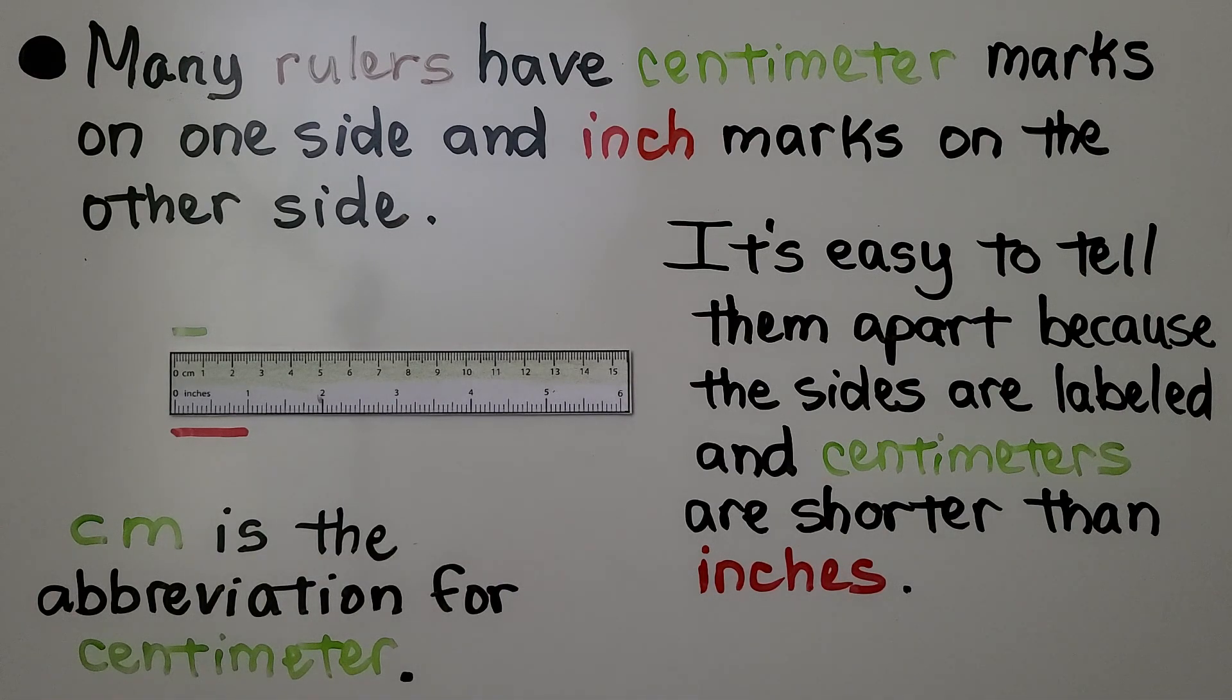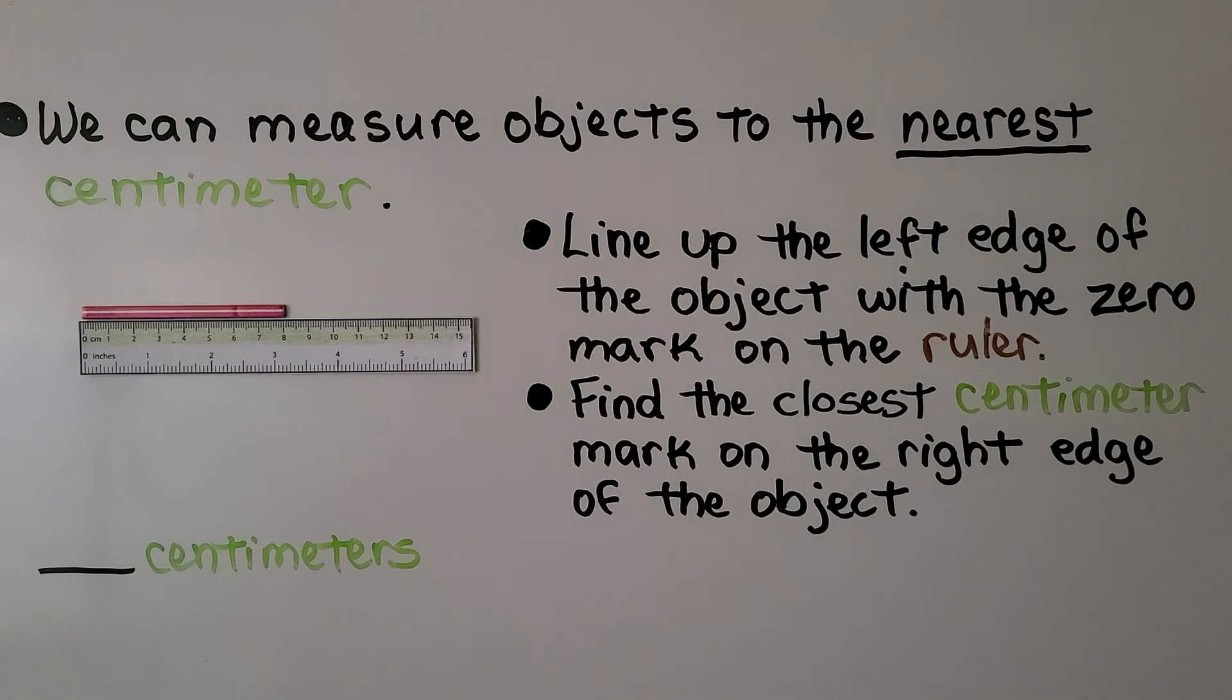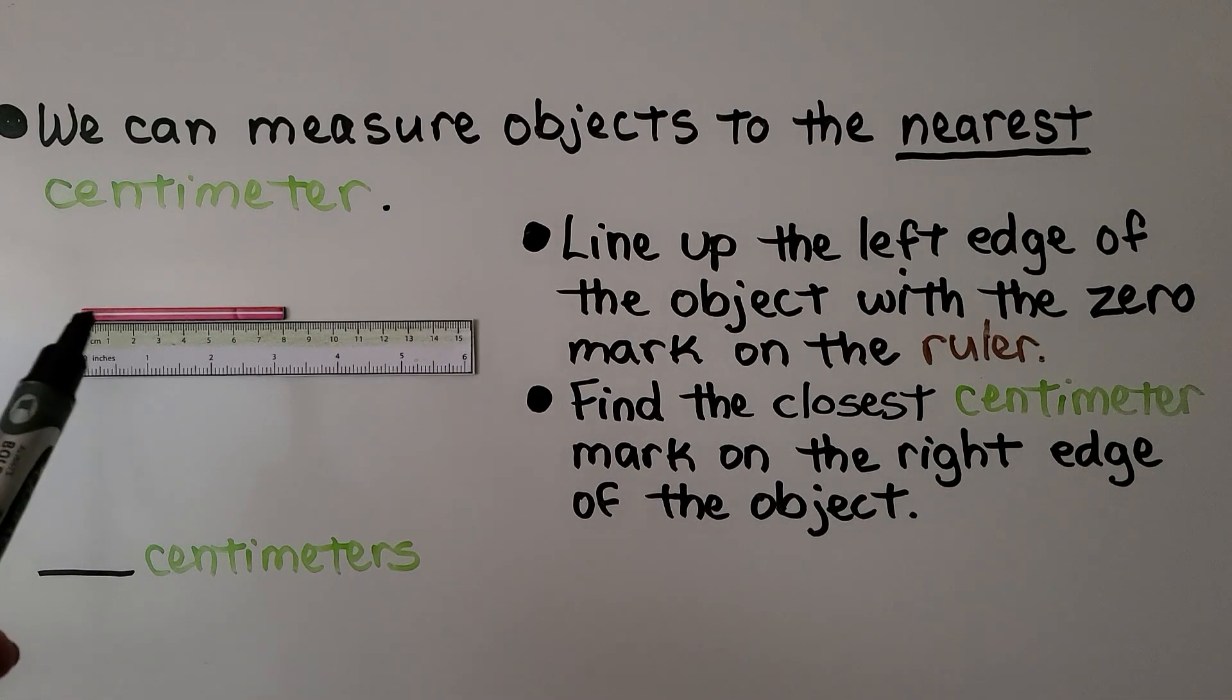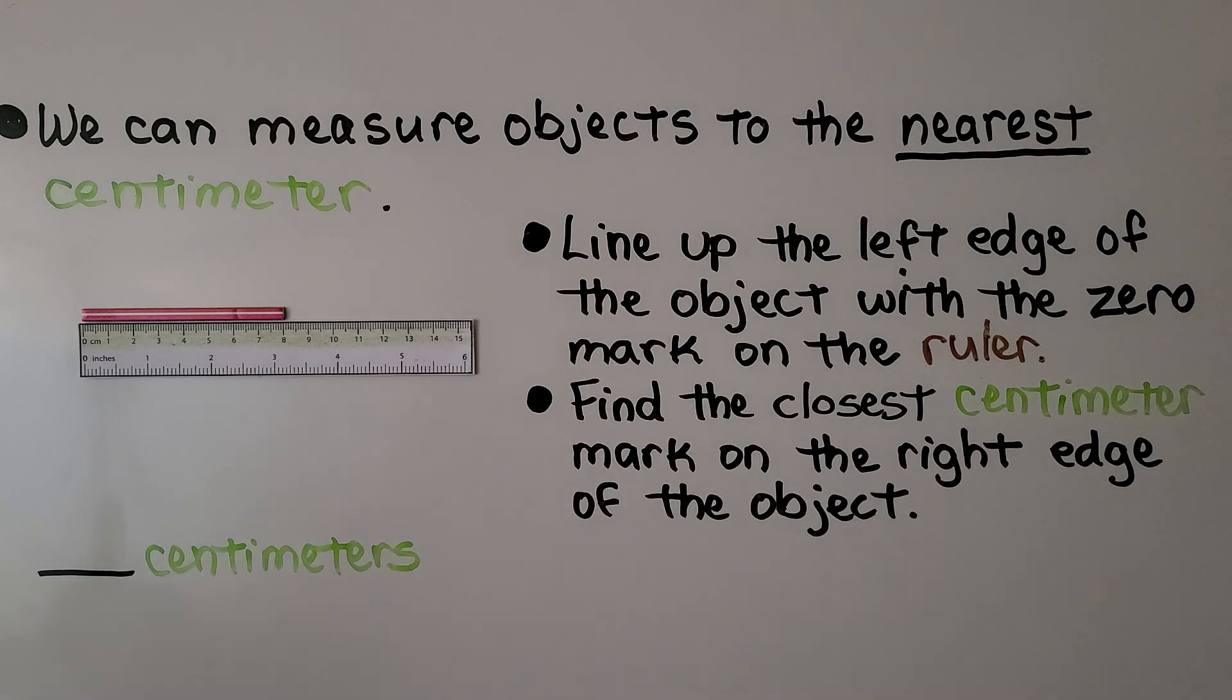We can measure objects to the nearest centimeter. So to measure this red stick, we line up the left edge of the object, the red stick, with the zero mark on the ruler. So it's not the edge of the ruler. If you look carefully, the zero is a little bit in.